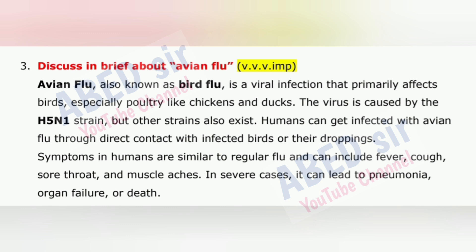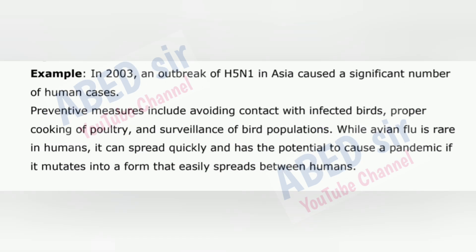In severe cases, it can lead to pneumonia, organ failure or death. In 2003, an outbreak of H5N1 in Asia caused a significant number of human cases. Preventive measures include avoiding contact with infected birds, proper cooking of poultry and surveillance of bird populations. While avian flu is rare in humans, it can spread quickly and has the potential to cause a pandemic if it mutates into a form that easily spreads between humans.